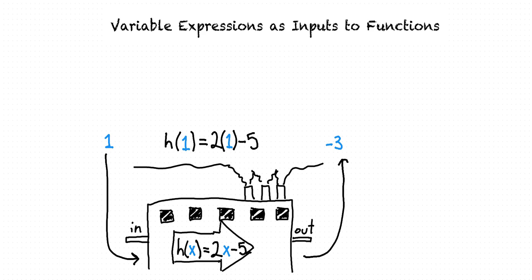And so that's how our factory works. We take some input, apply the function to it, and we get our output. However, we don't just have to put in numbers into our factory. We could also pass an expression through our factory, such as x minus 2.